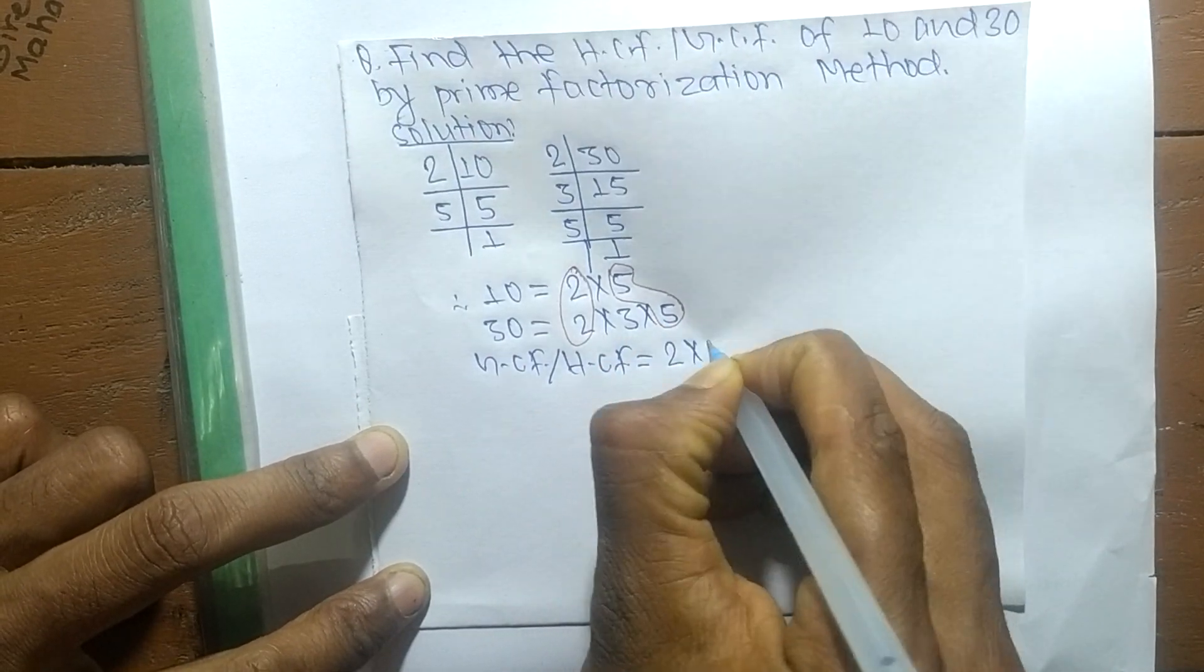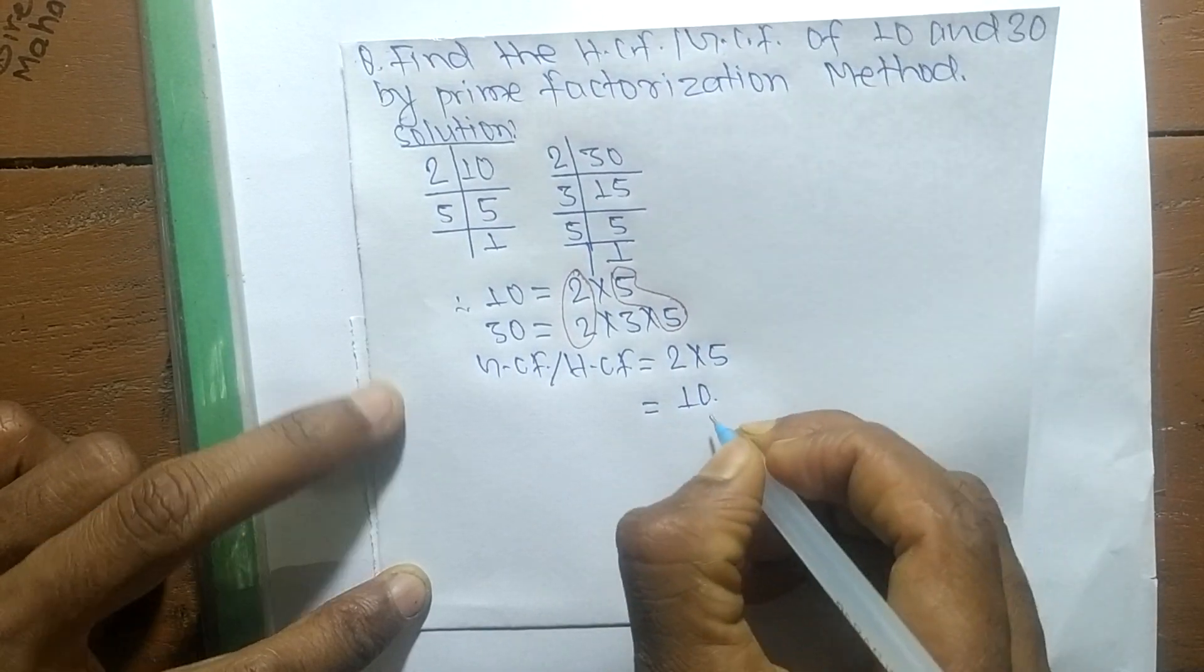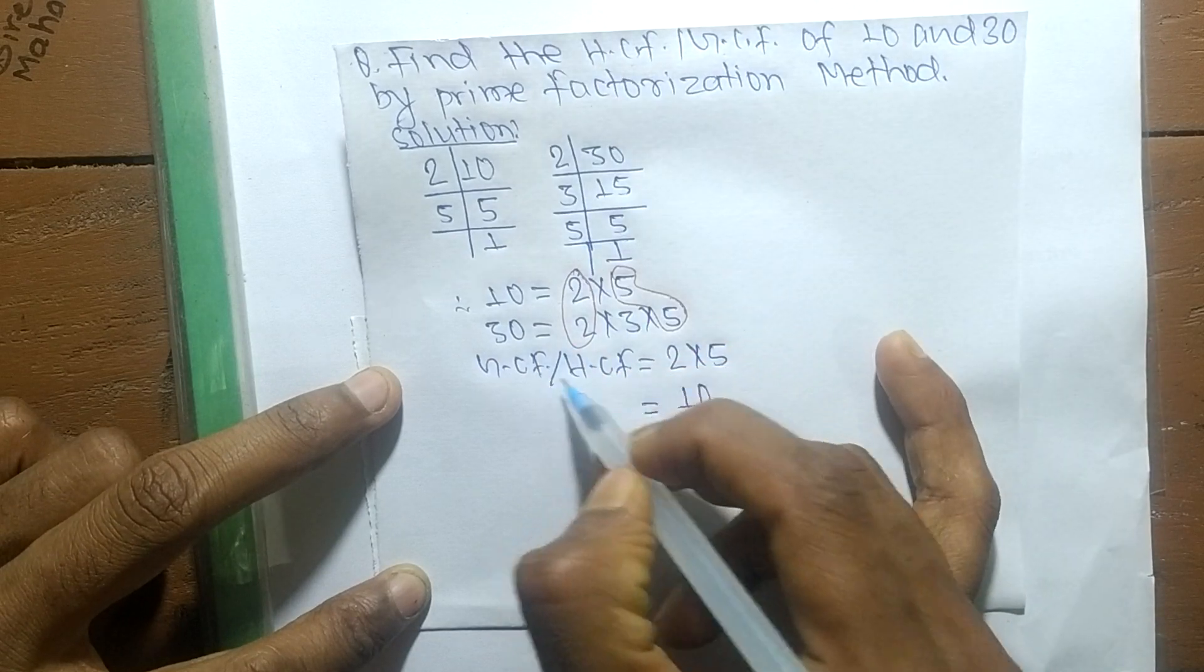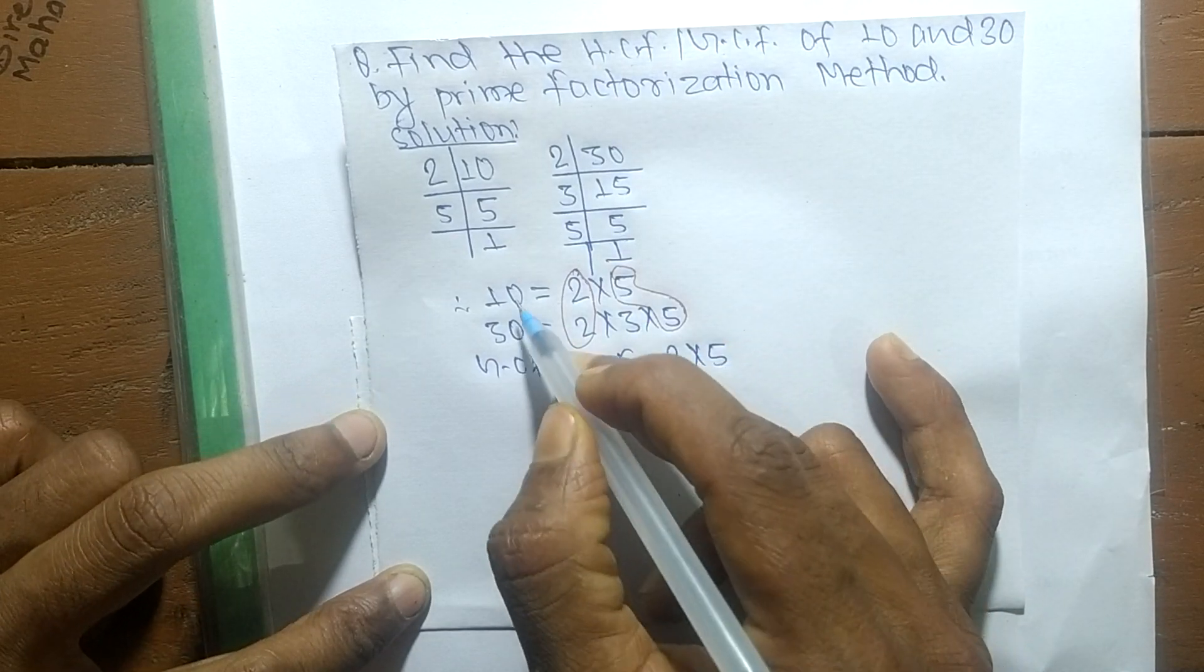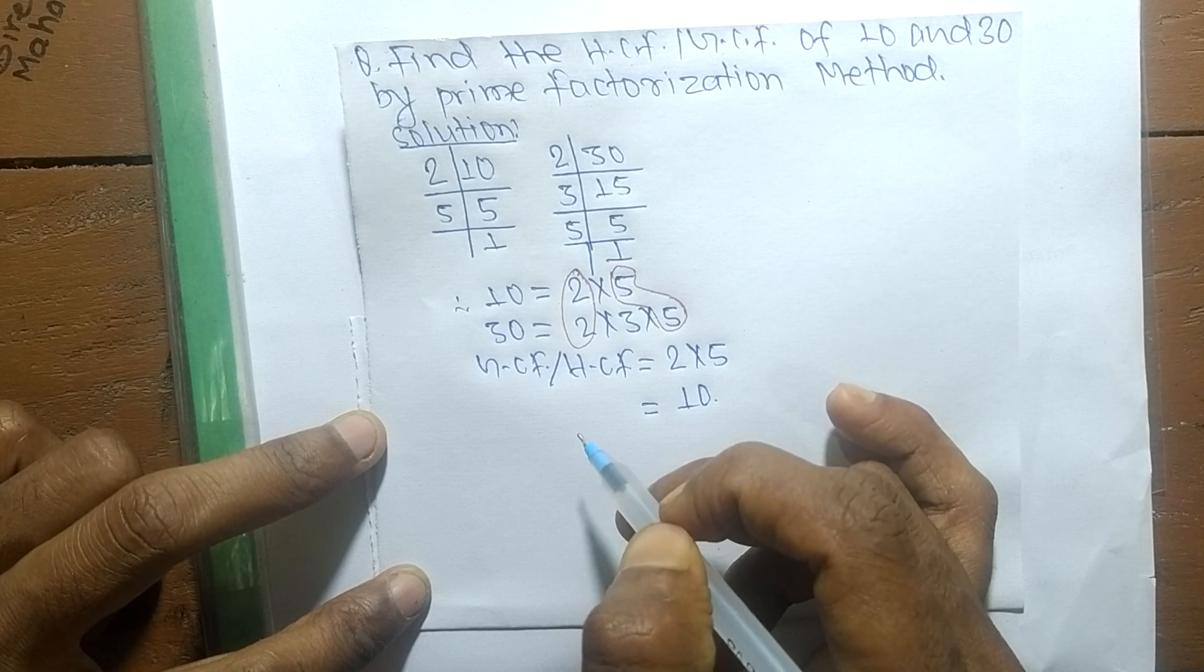So GCF or HCF equals the product of common factors: 2 into 5, which equals 10. This means 10 is the GCF or HCF of 10 and 30. That's all for today, and thanks for watching.